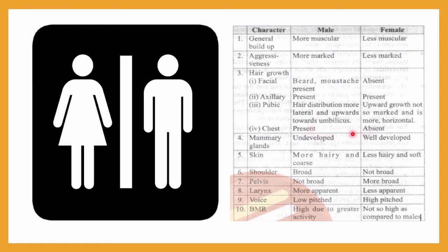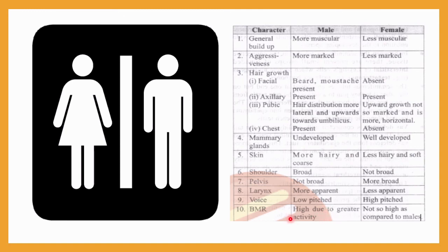On the chest, hair growth is heavy in males and absent in females. The mammary gland is present but underdeveloped in males and well developed in females. Male skin is hairy and coarse whereas female skin is hairy and soft. Male shoulders are more broad; male pelvis is not broad whereas female pelvis is more broad to accommodate pregnancy. The larynx is more apparent in males; males have a low pitch voice while females have a high pitch voice. BMR is higher in males due to greater activity.